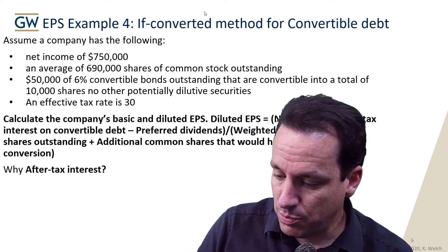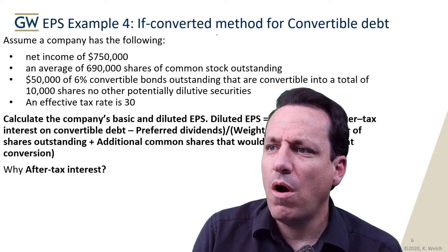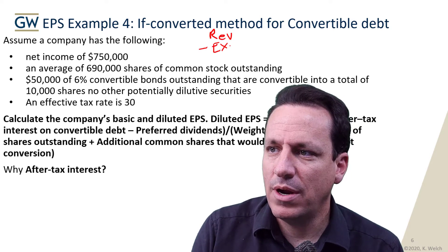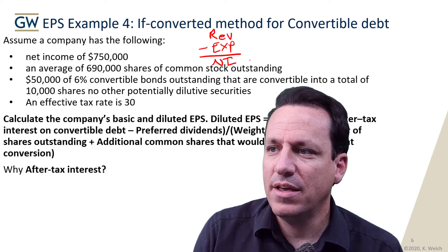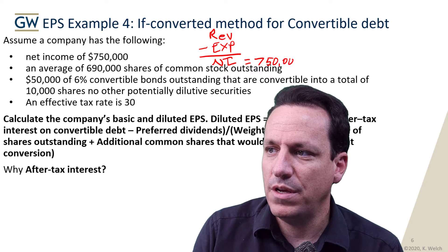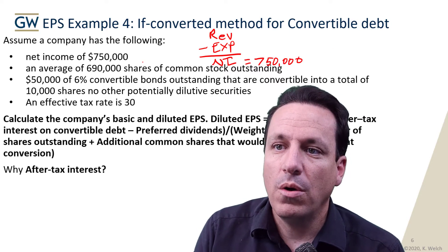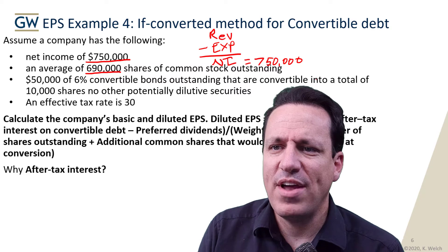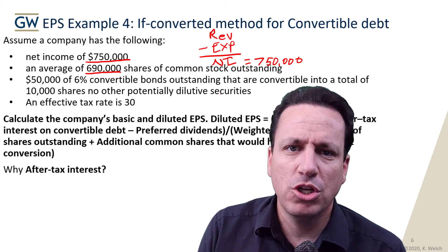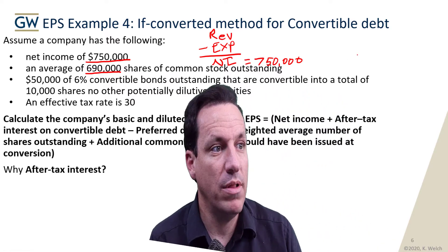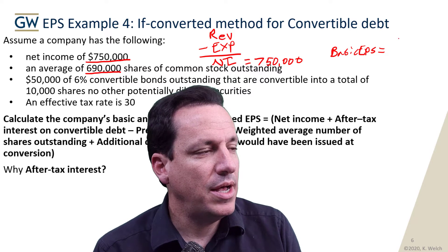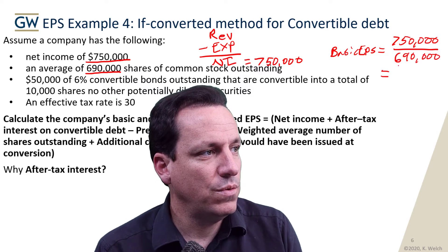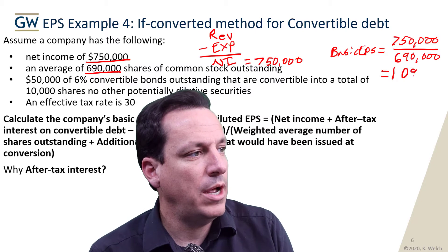For basic earnings per share, we have our net income. Revenue minus expenses gets us to net income, and that net income is equal to $750,000. They have an average number of common shares outstanding of 690,000. We didn't see any preferred securities or preferred dividends, so we can do basic EPS right now. Basic EPS equals $750,000 divided by $690,000 — because we don't have any preferred dividends — which equals $1.09. That's our basic EPS.